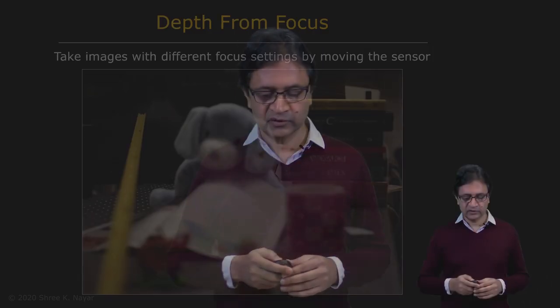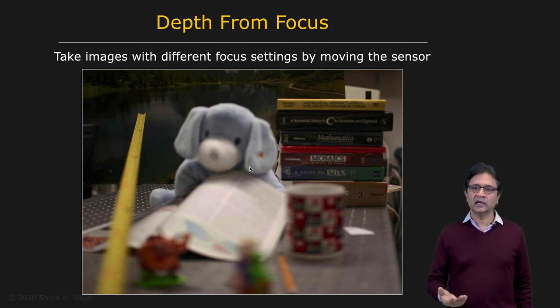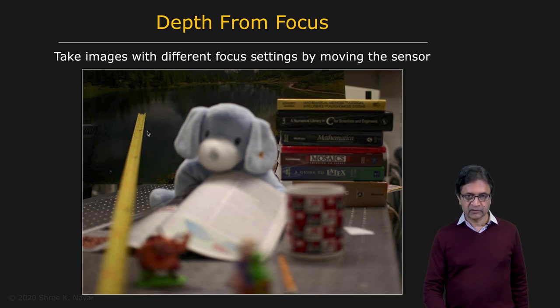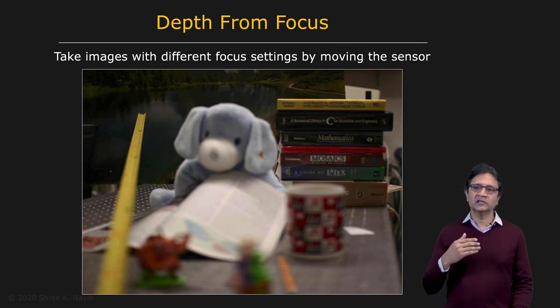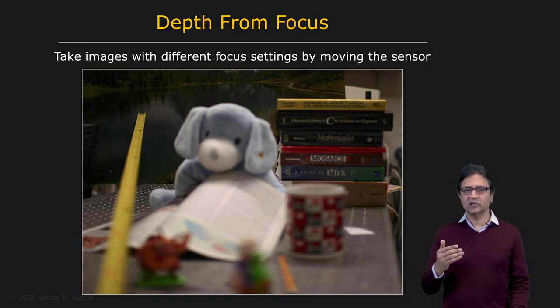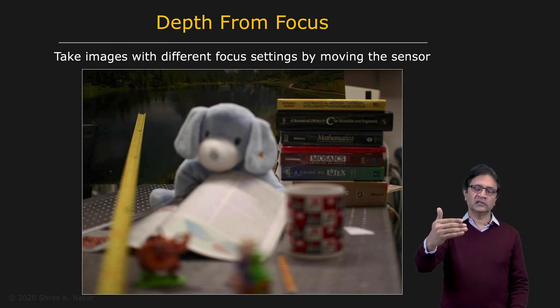Now let's talk about our first method for recovering depth based on focus or defocus, and that's called depth from focus. Here is a scene taken with a camera with a shallow depth of field. The idea behind depth from focus is essentially to take a series of images with different focus settings, for instance by moving the image sensor, so you're sweeping the plane of focus through the scene itself.